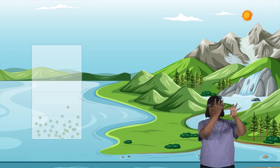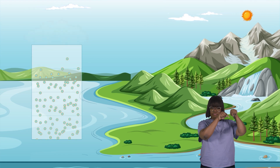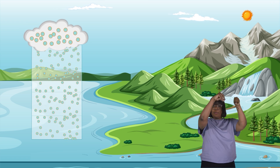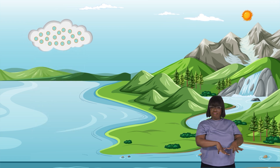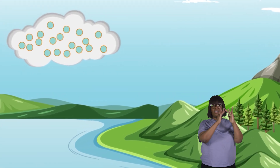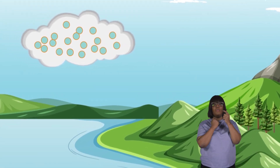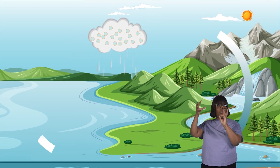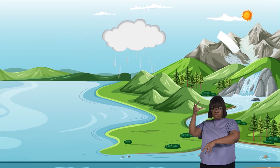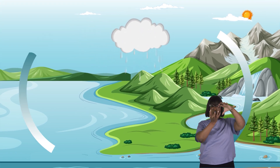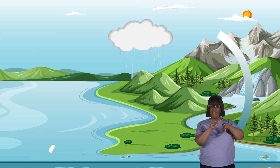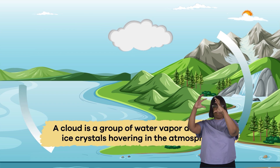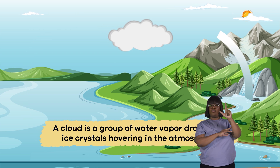Clouds start forming when the liquid water droplets in our atmosphere transform into gaseous water vapor. When the water vapor rises, it comes into contact with cooler, thinner air. As the warm air and water vapor cool, clouds are formed. All of that is a long way of saying that a cloud is a group of water vapor droplets, or ice crystals, hovering in the atmosphere.